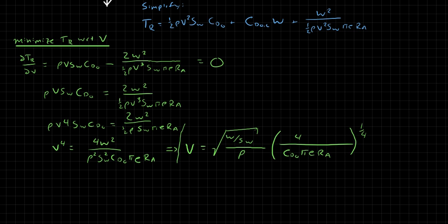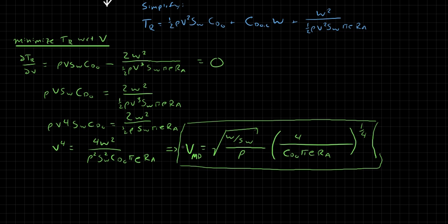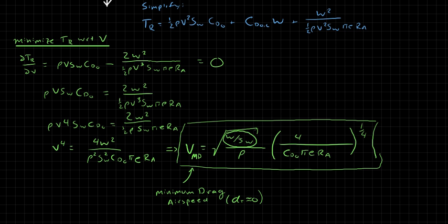This is the velocity that minimizes thrust required for a small thrust angle approximation (alpha_t ≈ 0), and it is known as the minimum drag airspeed, V_md. Notice the term W over S_w in the expression — this is commonly seen in aircraft design and performance analysis and is known as wing loading: a measure of the weight relative to wing area.